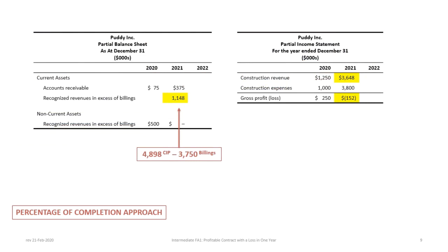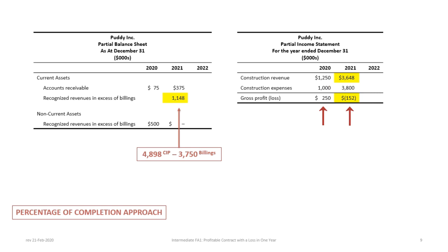On to our balance sheet and income statement for 2021: accounts receivable is still $375,000 and hasn't changed from previous scenarios. What has changed is our recognized revenues in excess of billings. Recalling from previous tutorials, this is now current because it's a three-year contract with one year left, so there is no non-current portion. The entire portion is classified as current, based on our CIP balance of $4,898,000 less billings of $3,750,000. Our construction revenues are $3,648,000 and construction costs are $3.8 million, giving us a loss of $152,000 this year. The contract is still profitable overall, but we're showing a loss in 2021 — and that can happen. You can have contracts showing positive gross profit in one year, a loss in the next, and a profit in another, as long as the contract is profitable overall.